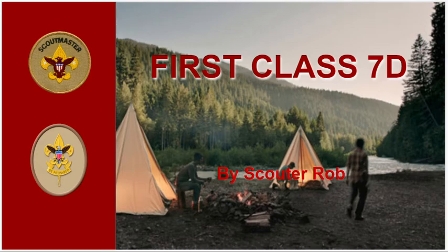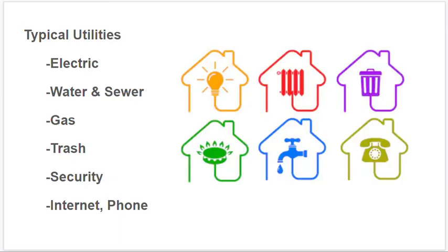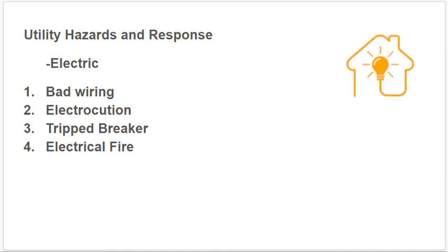First Class Scout Requirement 7D: tell what utility services exist in your home or meeting place, describe potential hazards associated with these utilities, and tell how to respond in emergency situations. There are many typical utilities, and some others not included in this video depending on what part of the country you live in. Let's go over some of the basic ones: electric, water and sewer, gas, trash, security, and internet or phone service. Let's also talk about the hazards and responses to each one.